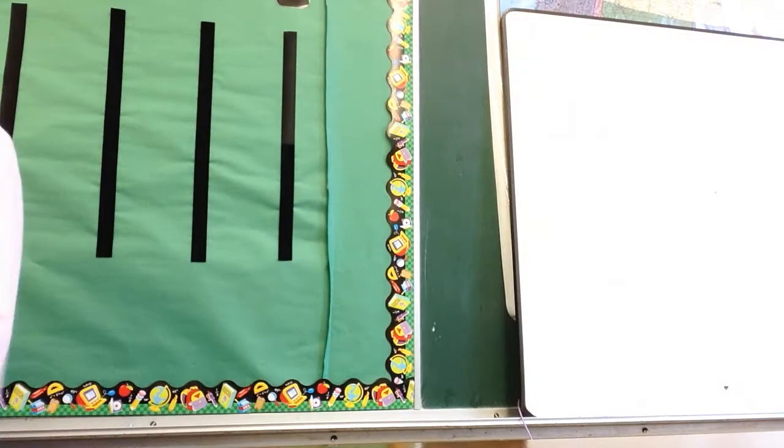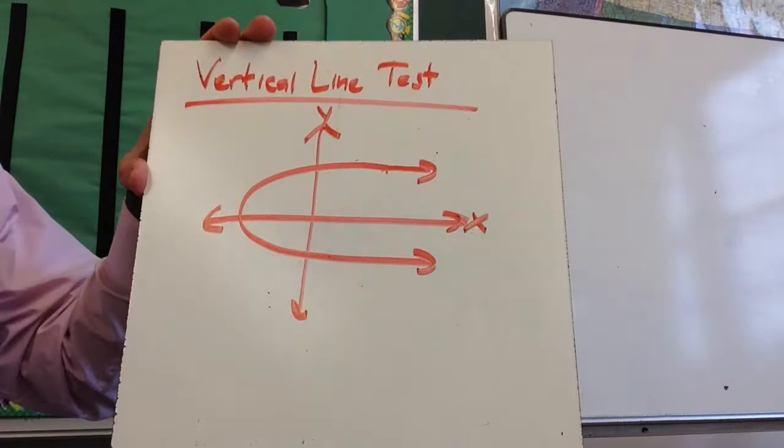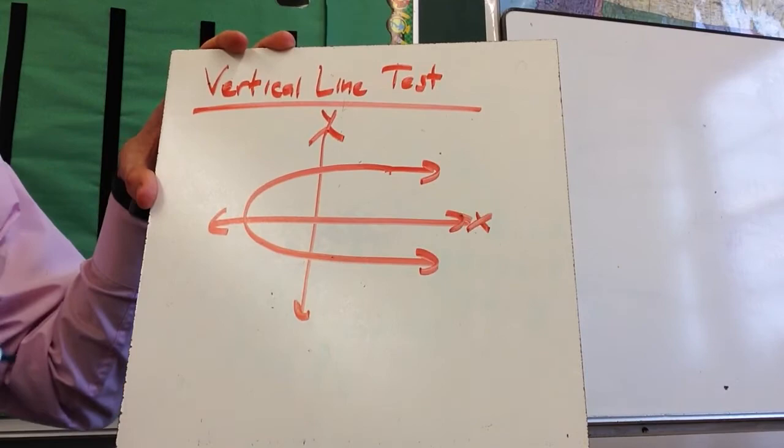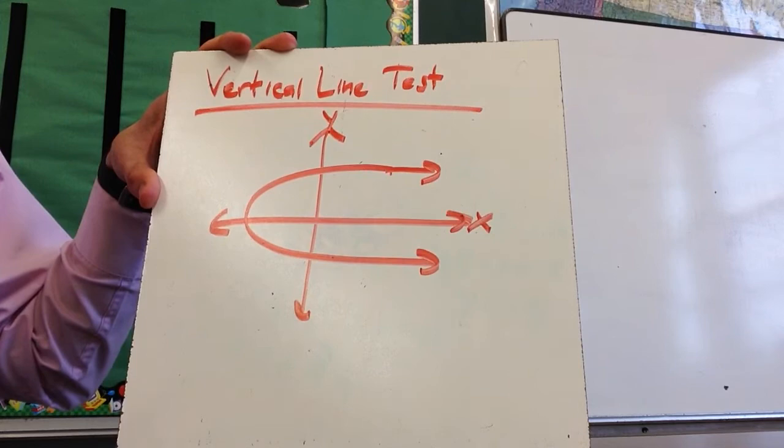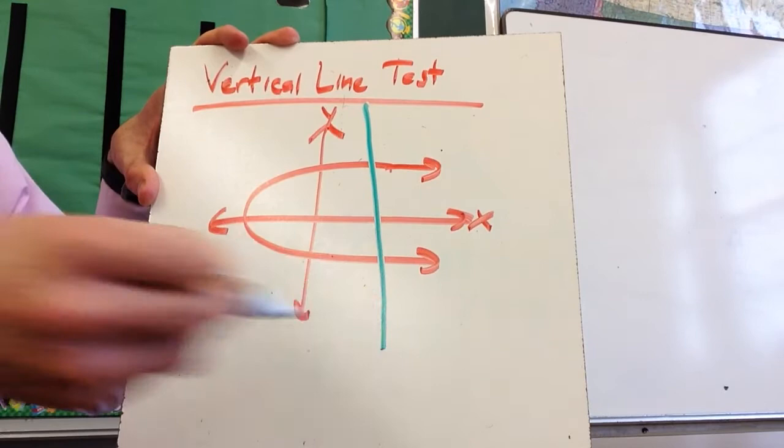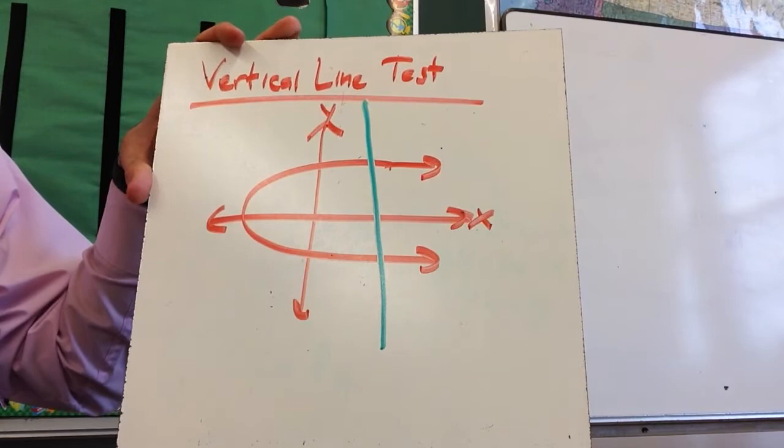Alright, then let's talk about the vertical line test. That's what happens if I give you a set of numbers. Now what happens if you get a graph? So if you're looking at a graph to determine a function, what I'm going to do is draw a vertical line, which is a line that goes straight up and down, parallel to the y-axis. And if this vertical line crosses the graph more than once, it is not a function. And as you can see, this crosses more than once, meaning this is not a function.